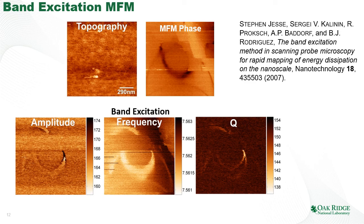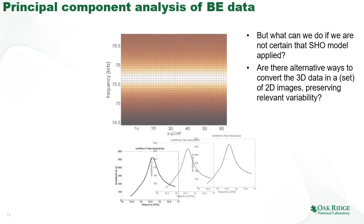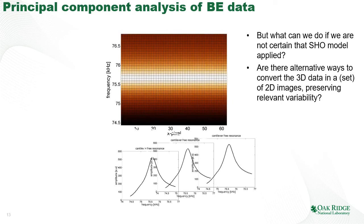Once we got this dataset, we were highly excited because instead of one image that is very difficult to interpret and somewhat unstable, we can now separate our signal into components which are much more reliable and have better-defined physical meaning. However, this separation is not ideal because we already postulate that the dynamics of the tip-surface system can be represented as a simple harmonic oscillator, and we don't know whether that is true. The question is: how can we get insight into tip-surface interactions without making any a priori assumptions about the physical model? Are there alternative ways to convert the three-dimensional dataset into two-dimensional images while preserving the relevant variability?